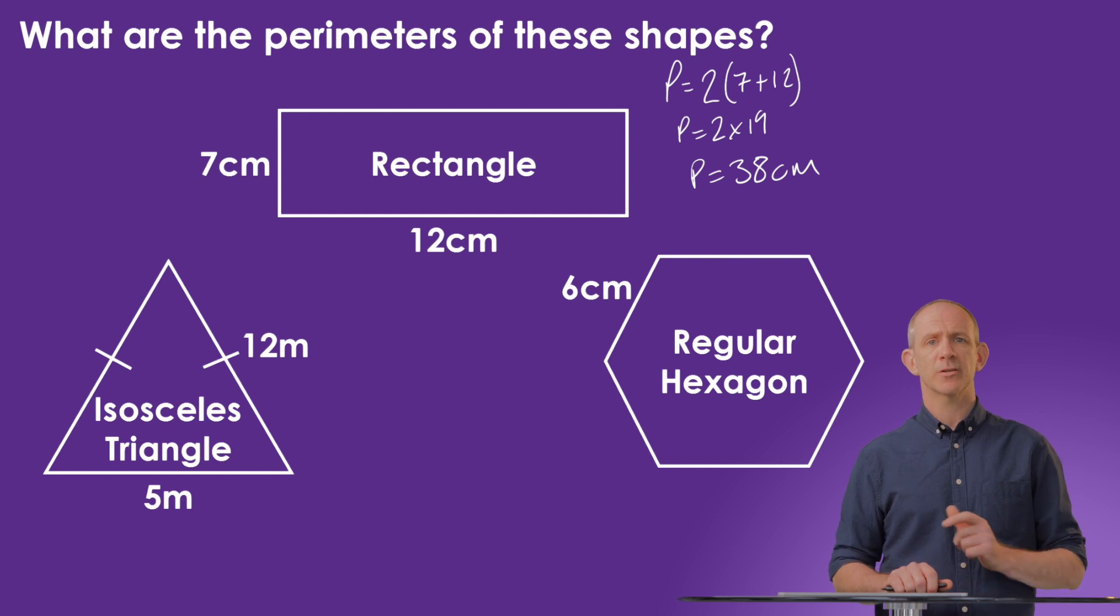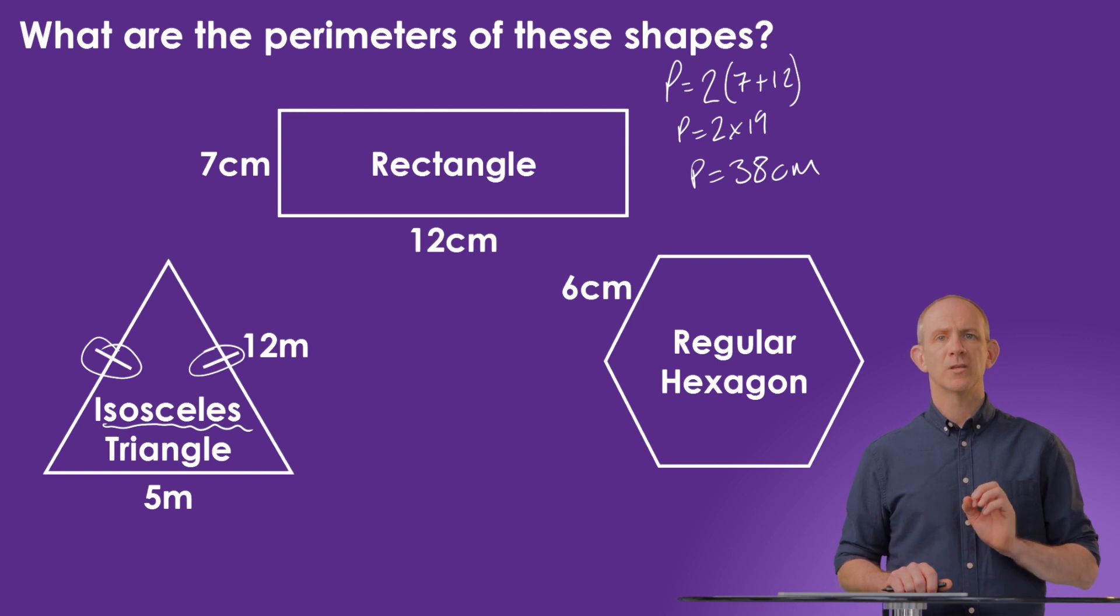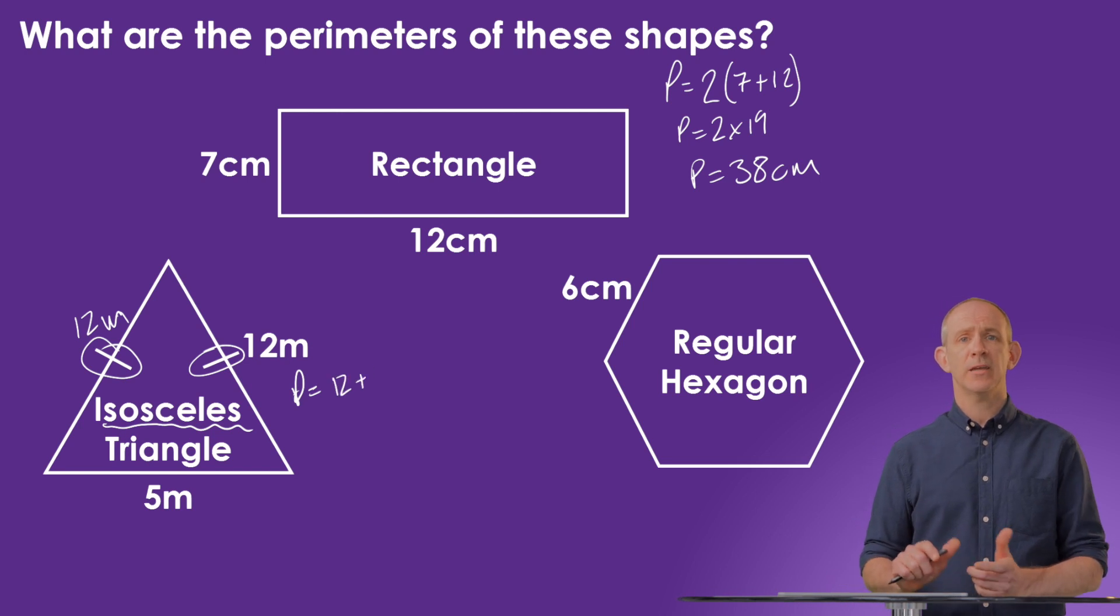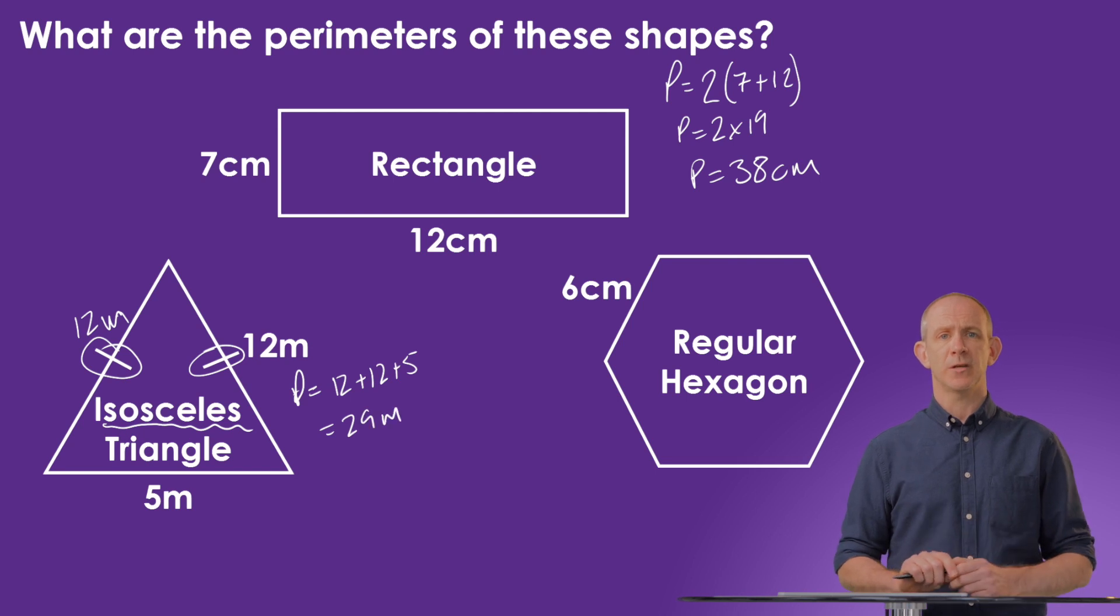In this next problem we've got an isosceles triangle. So knowing the properties of an isosceles triangle, I know I can assume two of these lengths are equal, as signified by these notation lines. We can safely state that this side is also 12 meters, and the base we can see is 5 meters. In the same method as for a rectangle, we just have to measure all the lengths and add them together so we can say 12 plus 12 plus 5 equals 29 meters. Again we're using the units and measurements that have been used in the problem.